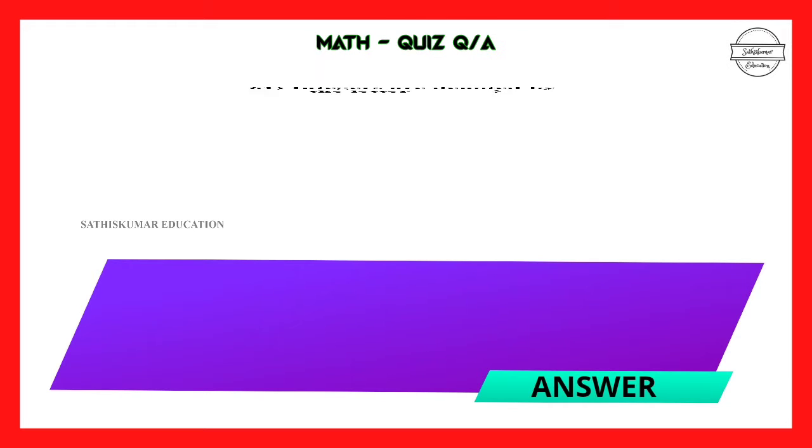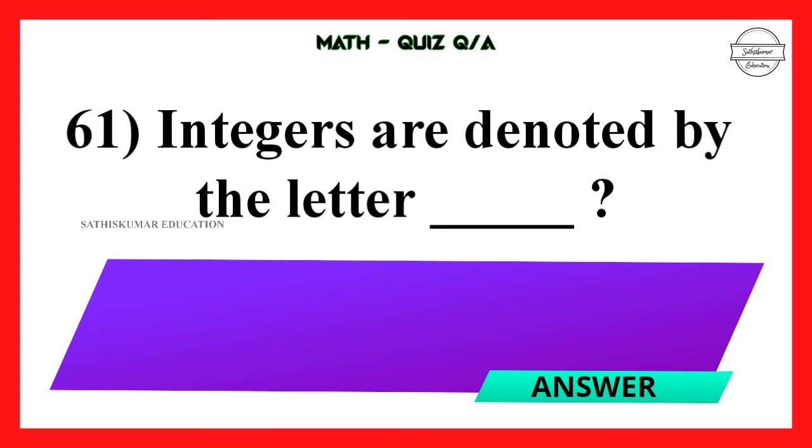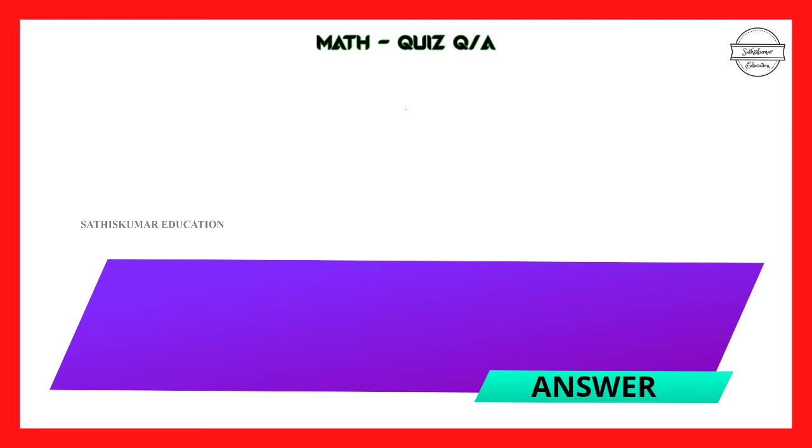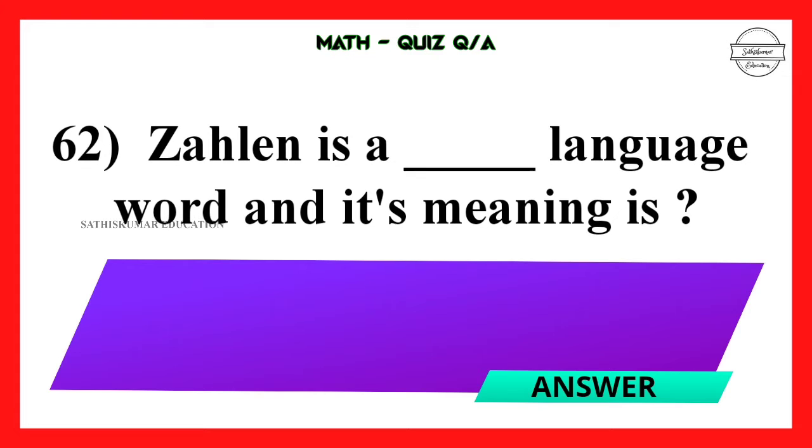Question number 61: Integers are denoted by the letter Z. Question number 62: Zahlen is a German language word and its meaning is German language, Zahlen means number.